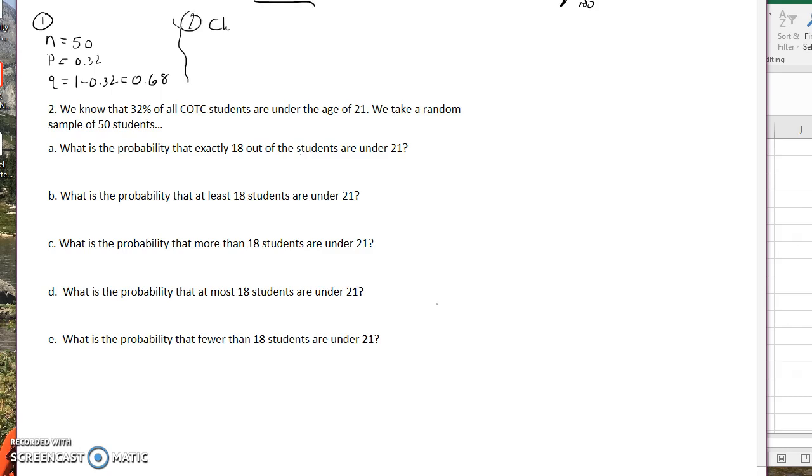Step two is going to do that check step because we want to make sure n times p and n times q are greater than 5. So n times p is 50 times 0.32, which equals 16. The next one, we're going to do n times q, which is 50 times 0.68, which is 34. Looks like they're both bigger than 5, so we are good to go.